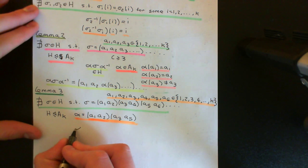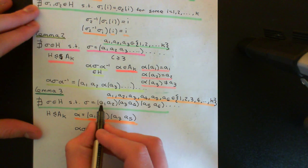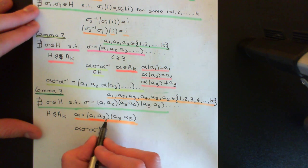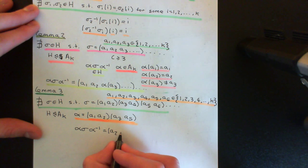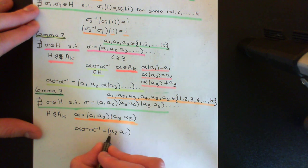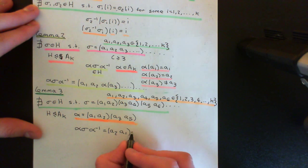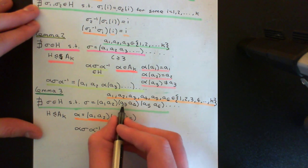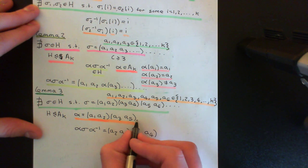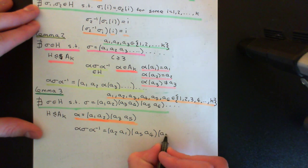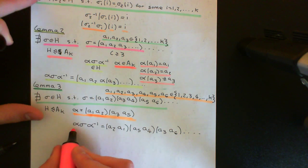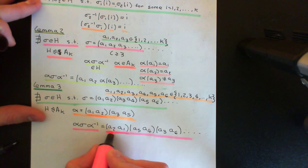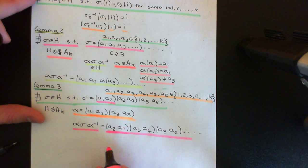Now let's think about what happens when we conjugate sigma by this alpha. We just relabel the elements: alpha relabels a1 as a2, so we get a2 there; it relabels a2 as a1. That means the (a1, a2) cycle is unchanged — it's the exact same 2-cycle we had before. But here's the interesting bit: it will relabel a3 as a5. It won't do anything to a4, so a4 stays as itself. a5 goes on to a3 and a6 stays as it is, as do all the rest.